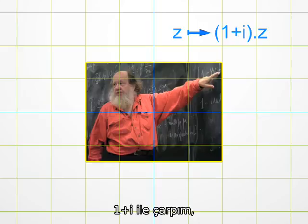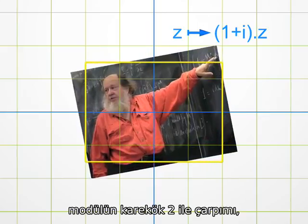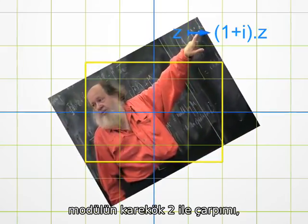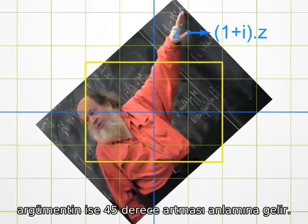Hence, a multiplication by 1 plus i amounts first to multiplying the modulus by the square root of 2, and then to adding 45 degrees to the argument.